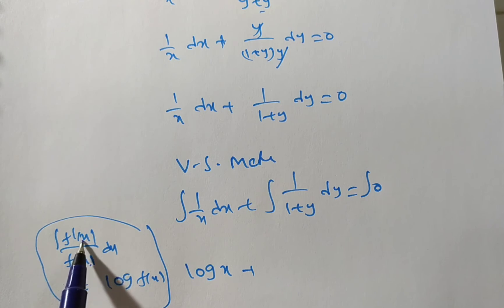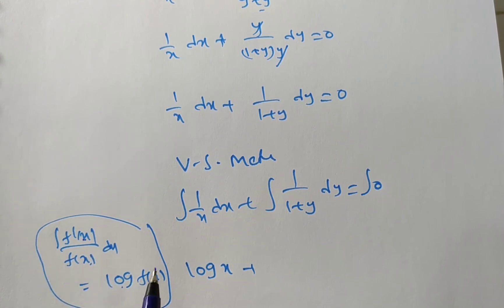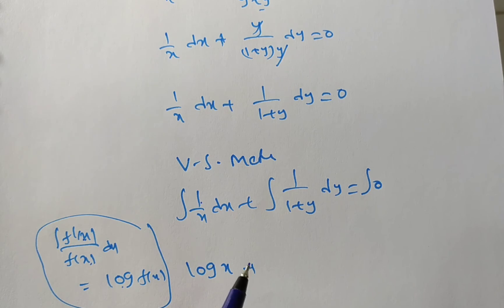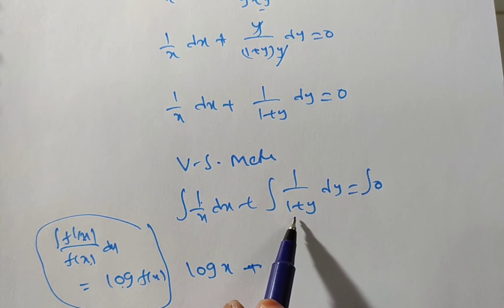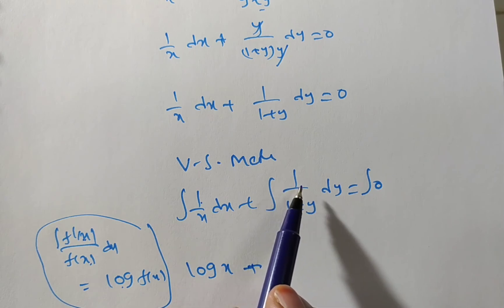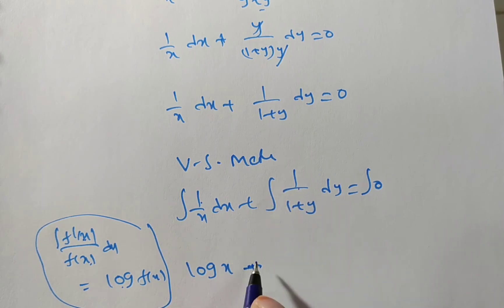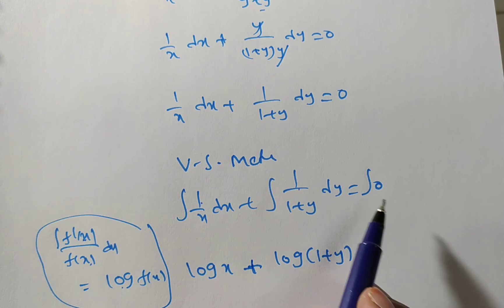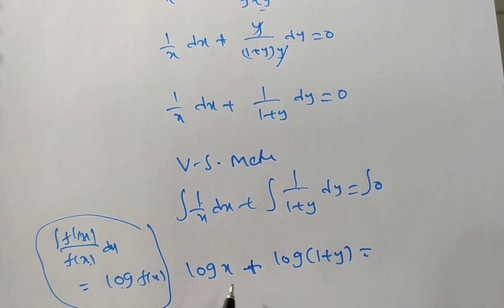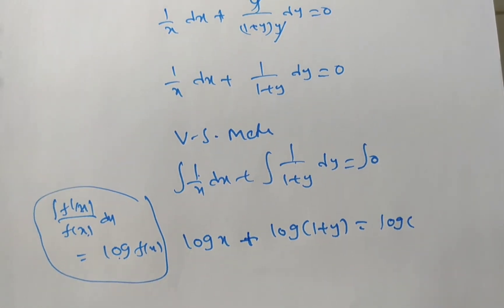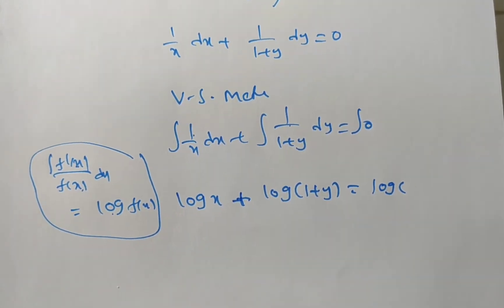If the derivative of the denominator appears in the numerator, you write the log of the denominator. For 1/x: the derivative of x is 1, which is in the numerator, so write log x. For 1/(1 + y): the derivative of (1 + y) is 1, which is in the numerator, so write log(1 + y). The result is log x + log(1 + y) = log c.